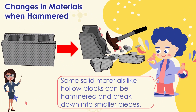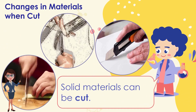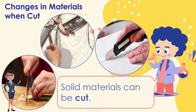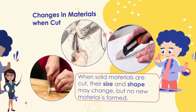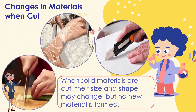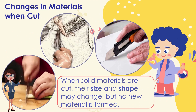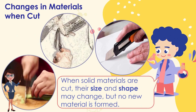Solid materials like metals can be hammered into thin sheets without breaking or cracking. Some solid materials like hollow blocks can be hammered and break down into smaller pieces. Solid materials can also be cut.